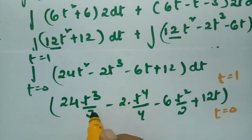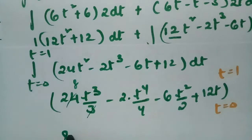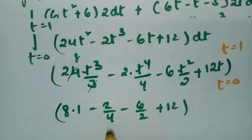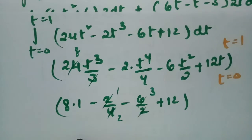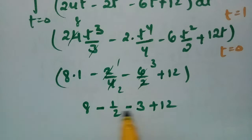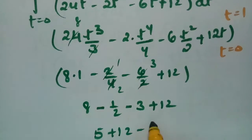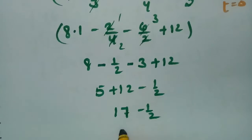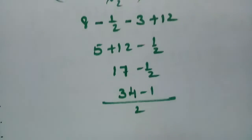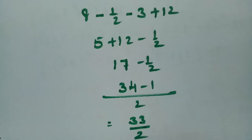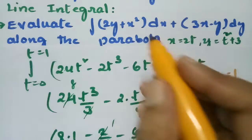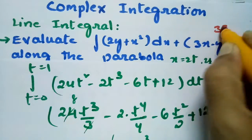Substituting t = 1: 24/3 - 2/4 - 6/2 + 12 = 8 - 1/2 - 3 + 12 = 17 - 1/2. Taking the LCM of 2: (34 - 1)/2 = 33/2. Therefore, the value of the integral is 33/2.